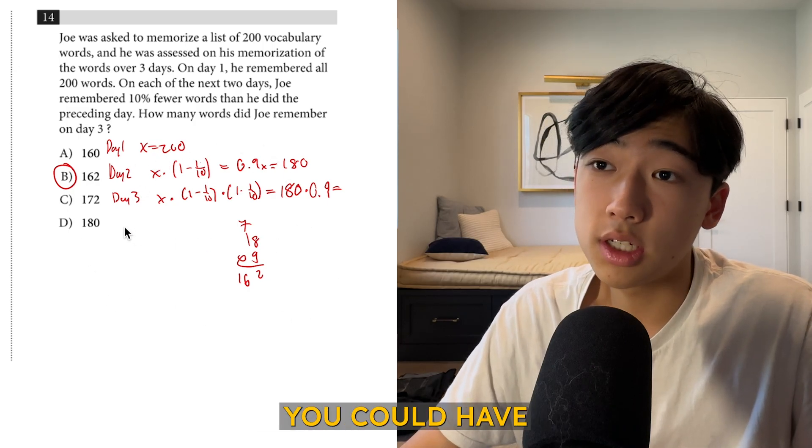Now number 14. Here I did this little diagram where each of the days he loses a total amount of his memory of words. What you can do mentally is just remember that every day you're losing 10%. So the first day, 10% of 200 is 20, so he would have had 180. And then 10% of 180 is 18, so you subtract 180, and then you get 162.